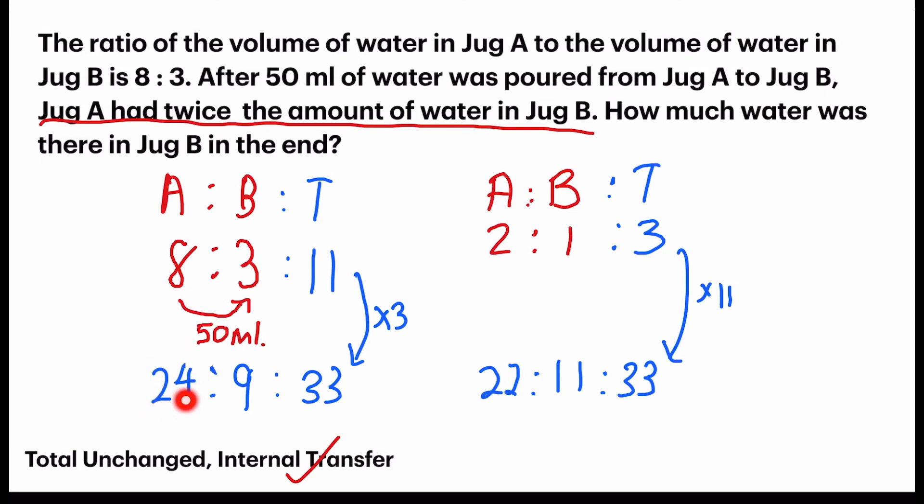So, let's observe the change. We have now 24 units for A before and 22 units after. The reduction is due to the transference of 50 ml. So, our first step is to take 24 minus 22. We get 2 units. That 2 units is equivalent to 50 ml. And now, they want us to find out how much water was there in jug B in the end. So, jug B and always refer to the correct new ratio, which is 11 units. I'm finding 11 units. So, our first step is to find one unit. So, 50 divided by 2. And then, I find my 11 units. So, sometimes I can combine them into one equation. And my answer is 275 ml. That's my final answer.